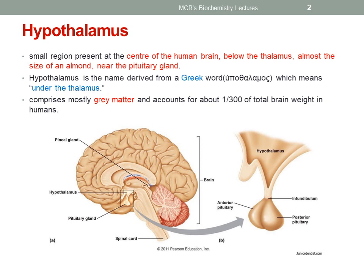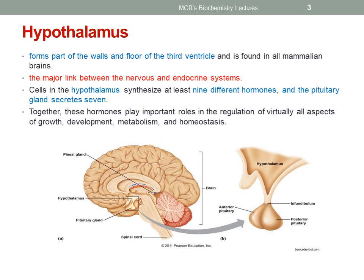The hypothalamus is a small region present at the center of the human brain below the thalamus, almost the size of an almond near the pituitary gland. Its name is derived from a Greek word which means 'under the thalamus.' It comprises mostly grey matter and accounts for about 1 in 300 parts of total brain weight in humans. The hypothalamus forms part of the walls and floor of the third ventricle and is found in all mammalian brains.